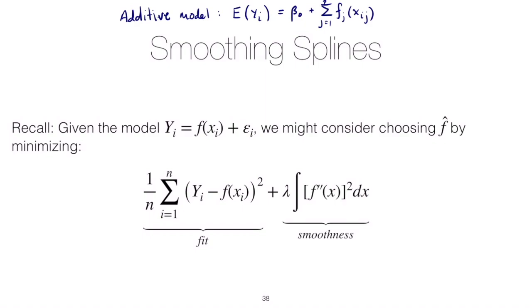This approach is analogous to the one-dimensional smooth fits. Recall that if you're given a model where the response equals some smooth function of one predictor plus some error, you might consider choosing your estimate of f by minimizing this function here, which is really the MSE plus a penalty. This fit term is like the MSE, mean squared error.